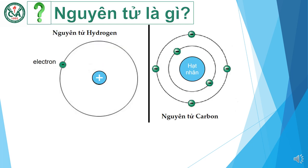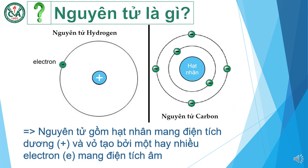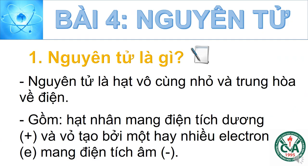Quan sát sơ đồ nguyên tử hydrogen và nguyên tử carbon, chúng ta thấy nguyên tử gồm hạt nhân mang điện tích dương và vỏ tạo bởi 1 hay nhiều electron mang điện tích âm. Tóm lại, nguyên tử là hạt vô cùng nhỏ và trung hòa về điện. Nguyên tử gồm hạt nhân mang điện tích dương và vỏ tạo bởi 1 hay nhiều electron mang điện tích âm.